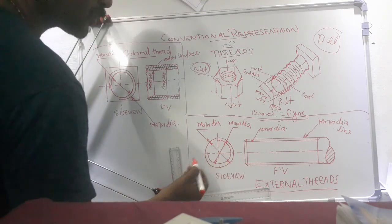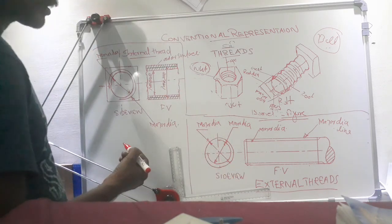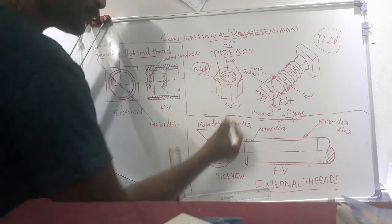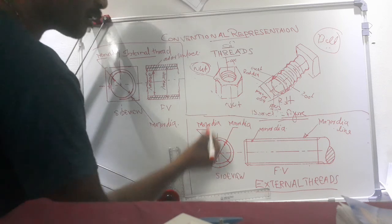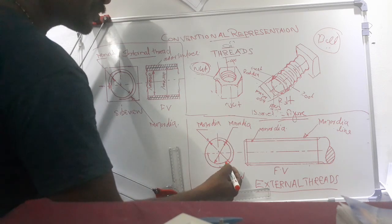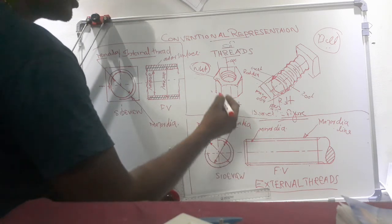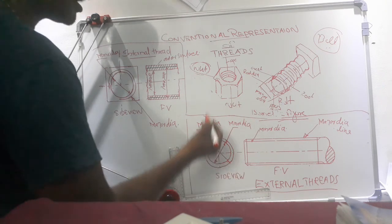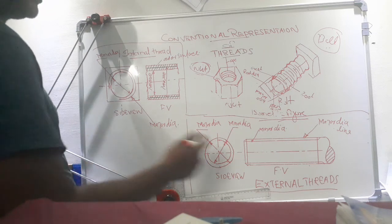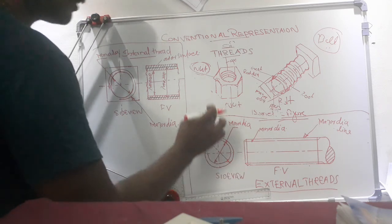In the side view, two circles are there — one is a full circle and another is a 3/4 circle. While representing conventionally, one of the circles is a 3/4 circle. In the side view, the inside circle — that is, the minor diameter circle — is the 3/4 circle. In the case of external threads at the side view, one of the circles is a 3/4 circle.